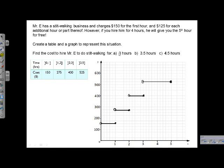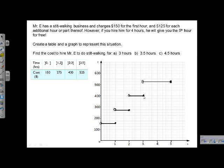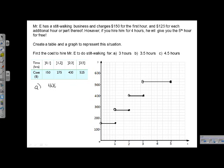We want to look at what's the cost of having him do stilt walking for three hours. We can go over to our graph, and we can see it's solid at $400. So the cost of it for three hours would be $400. If we wanted to look at our table, same thing. Closed bracket on the three means it's included in this group. And it's $400.